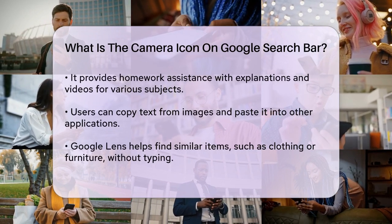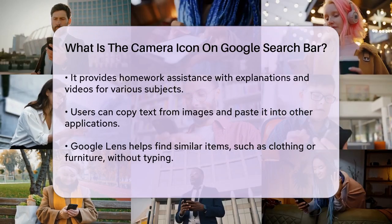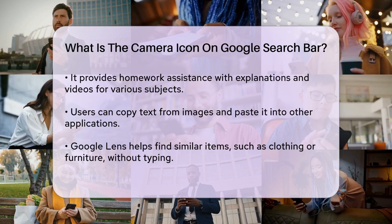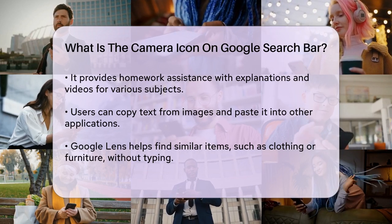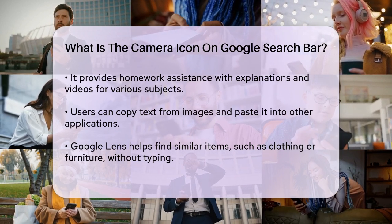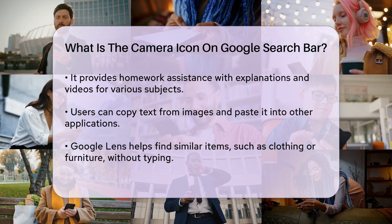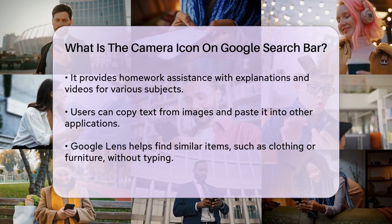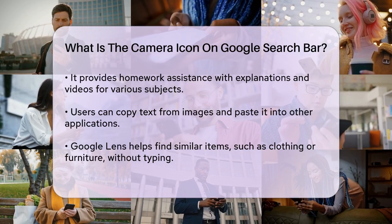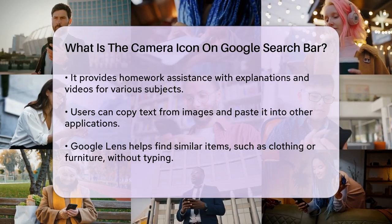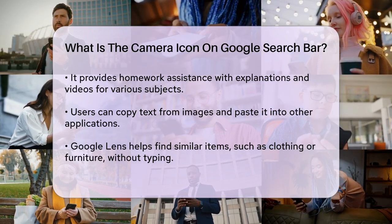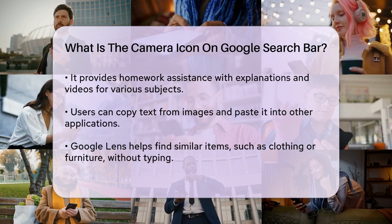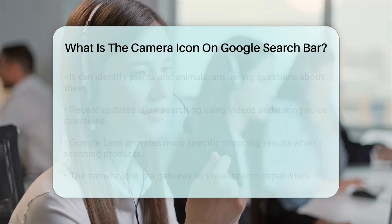Google Lens can do a lot more than just identify objects. It can translate text in real time from over 100 languages, help you with homework by providing explanations and videos for various subjects, and even let you copy text from an image and paste it into your phone or computer. If you see an outfit or furniture that you like, Google Lens can help you find similar items without you having to type anything.